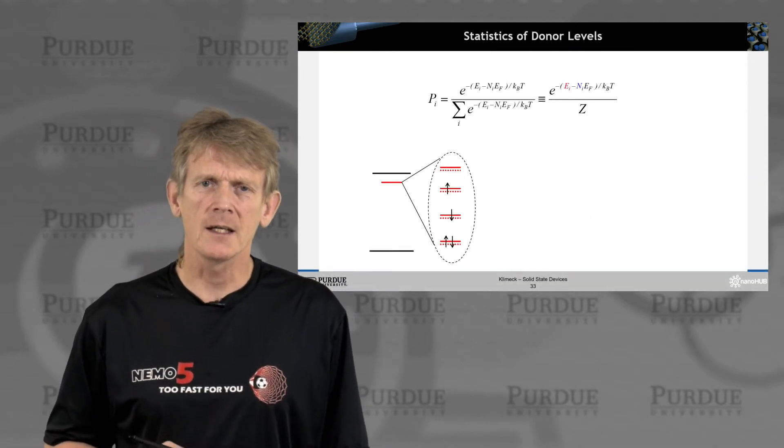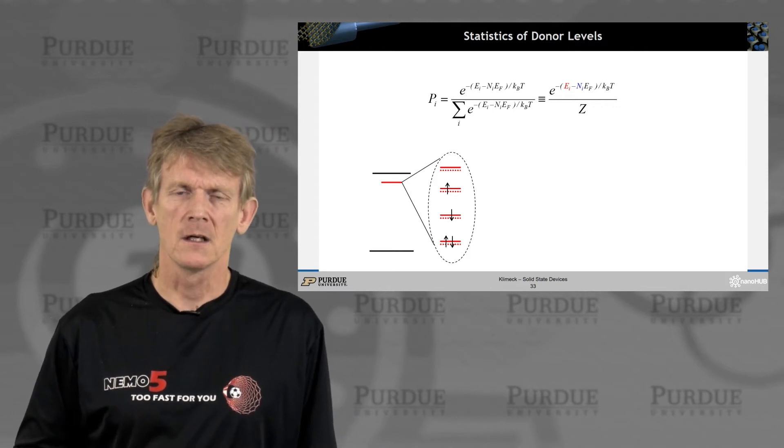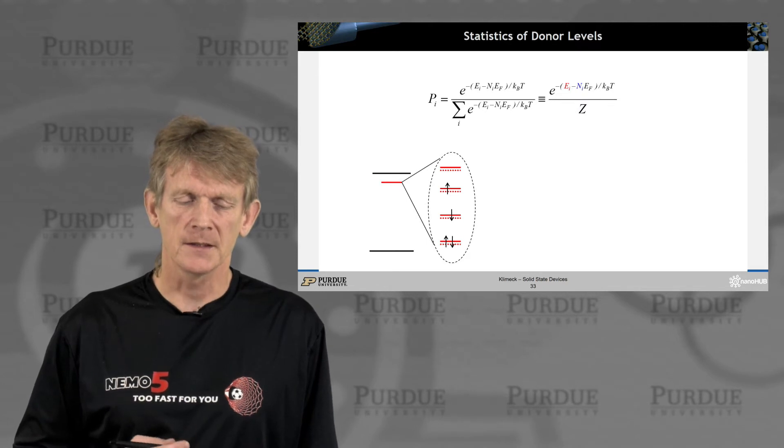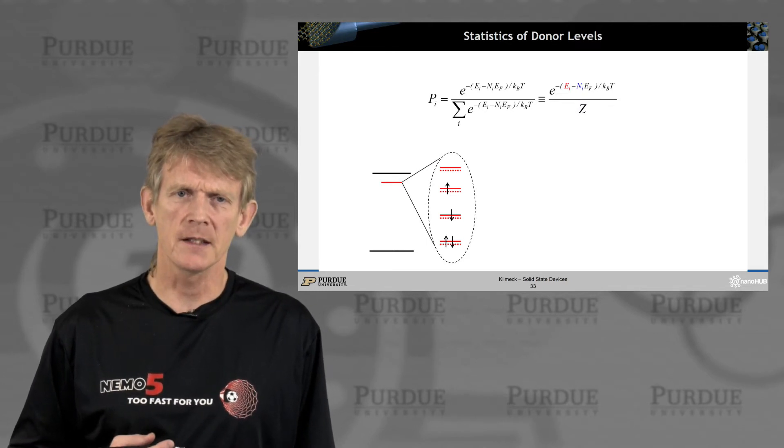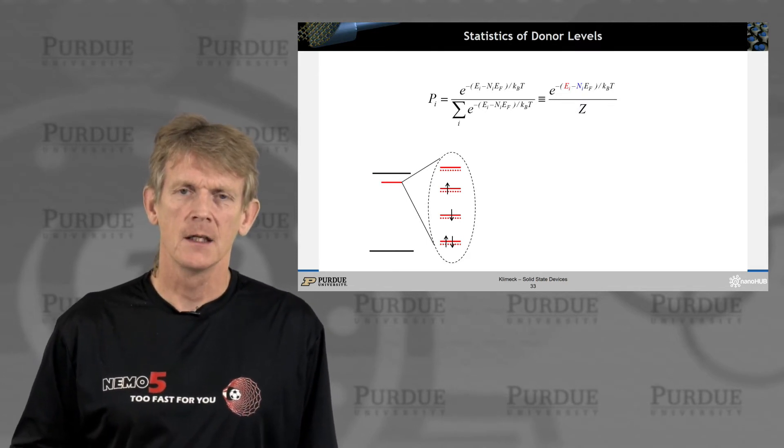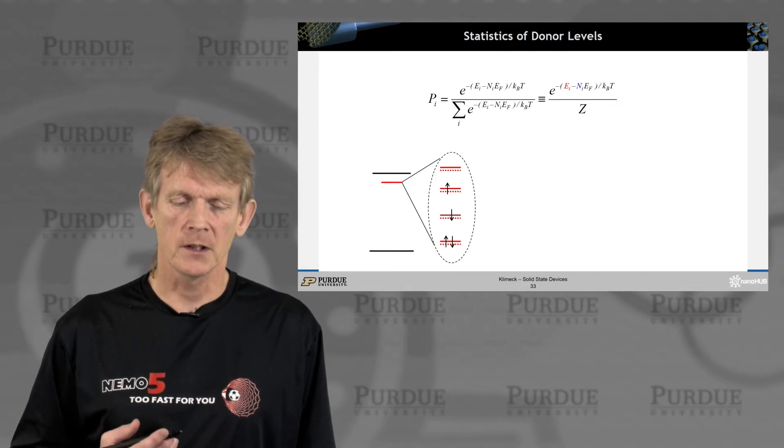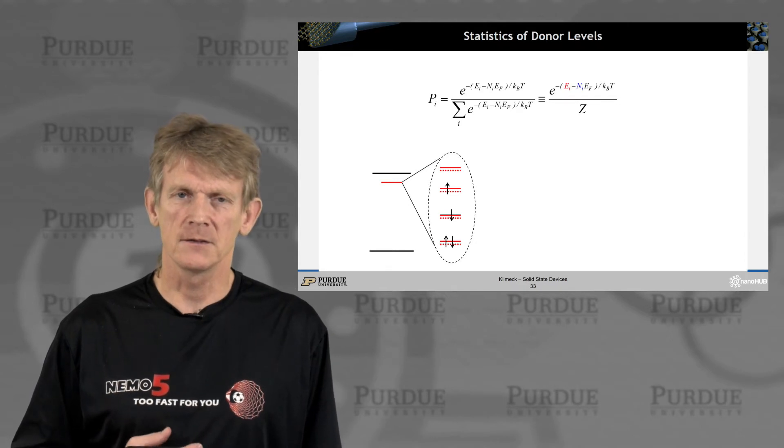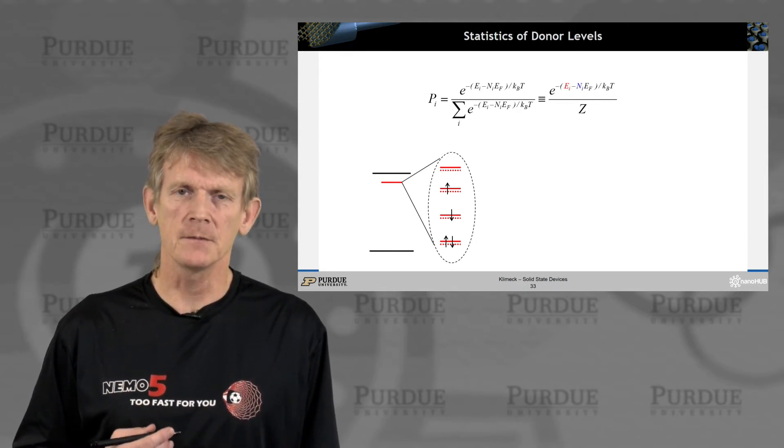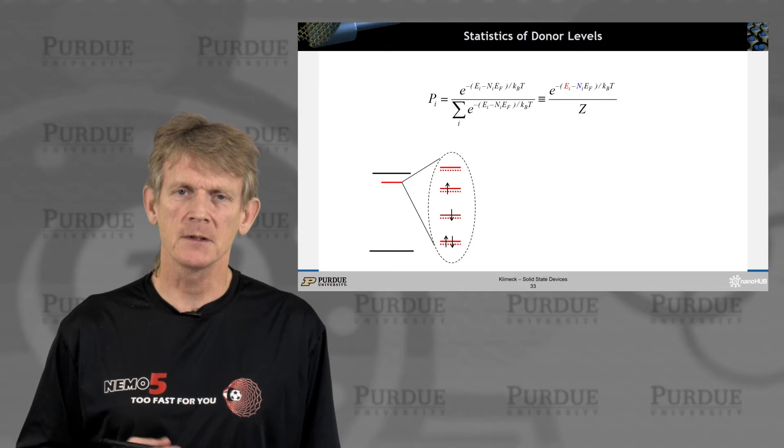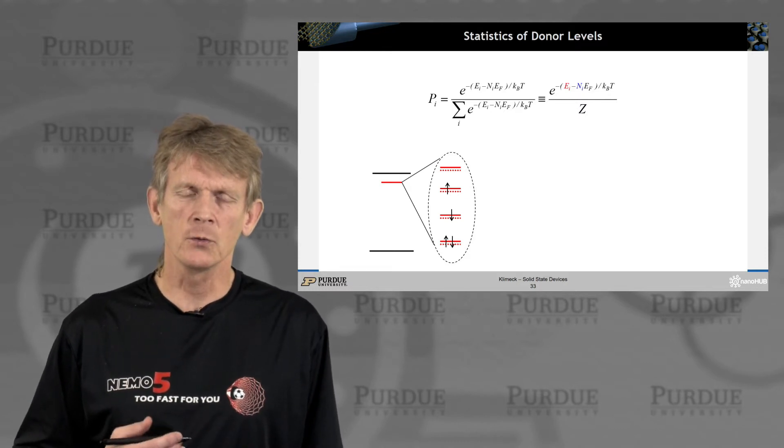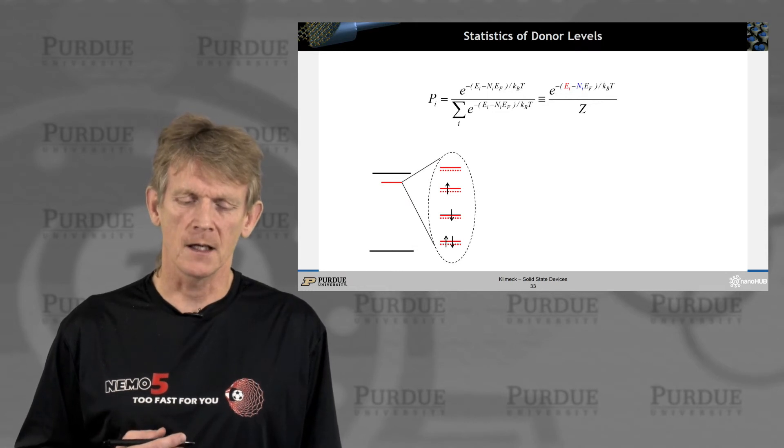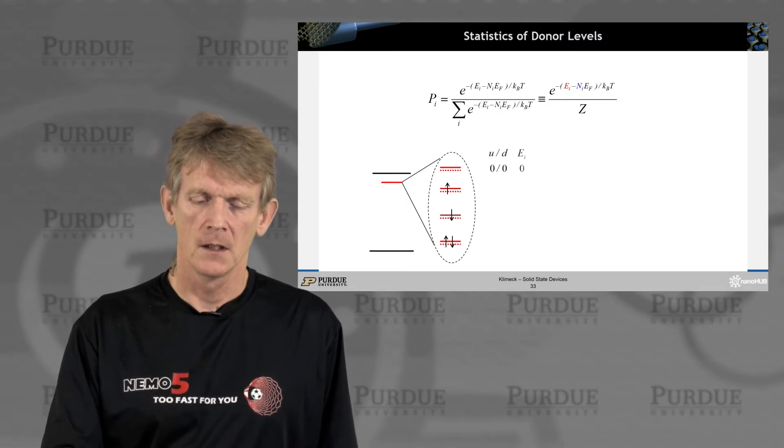Now let's look at the distribution and the occupancy of these donor states. Let's consider a single donor state that has just one level. In that system, in principle, we could have four states. There could be, this donor level could be empty, it could have one up spin, it could have one down spin, and it could have two electrons sitting on it, in principle, with one up and one down spin.